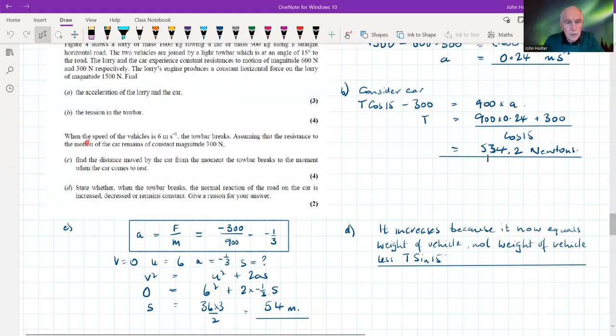This one goes on a bit further. When the speed of the vehicles is six meters per second, the tow bar breaks. Assuming that the resistance to the motion of the car remains constant at 300 newtons, find the distance moved by the car from the moment the tow bar breaks to the moment when the car comes to rest.